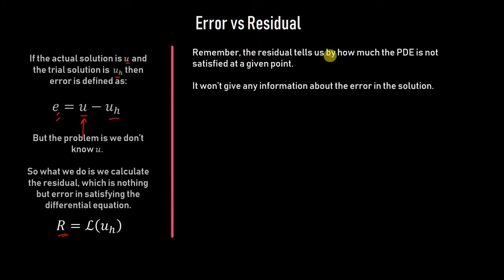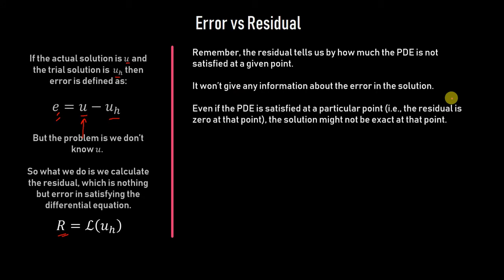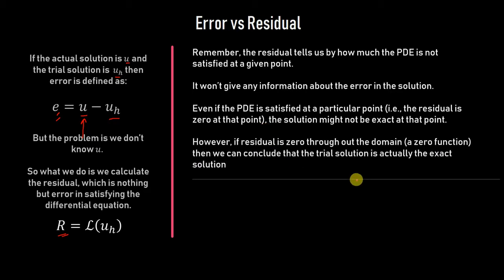The residual tells us by how much the PDE is not satisfied at a given point; it won't give direct information about the error in the solution. Although reducing the residual will also reduce the error, there is not a one-to-one connection. It is possible for the residual to be zero at a point while the solution is not exact there. However, if the residual is zero throughout the entire domain, we can conclude the trial solution is actually the exact solution.